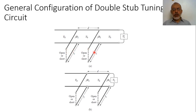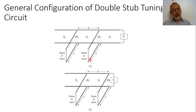The stubs can be open or short circuit stubs depending on the design of the tuner, but practically it is more suitable to use short circuit stubs, because a short stub can be obtained by introducing a conductive connector between the two terminals of the transmission line section, and this conductor can be moved inside or outside the stub. The other terminal of the tuning circuit is connected to the transmission line which has characteristic admittance Y0 or characteristic impedance Z0.